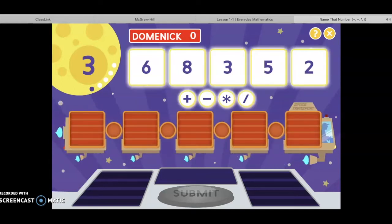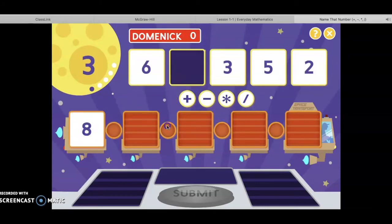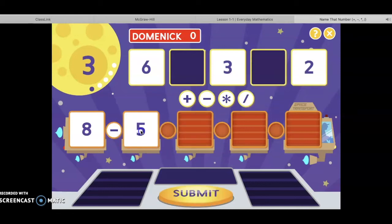So remember that multiplication and division come first. They are the more powerful operations. If I want to equal three, I can do something very simple. I can take eight and subtract five, and then eight minus five equals three. I can hit submit.